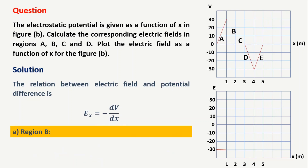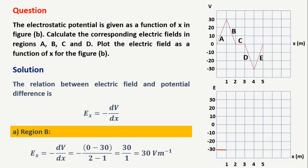Let us go for region B. Here the voltage goes down from 30 volts to 0 volts. So the change in voltage will be 0 minus 30. The electric field is the negative potential gradient at that point, so the answer is 30 divided by 1, which equals 30 volts per meter. Representing this in the E versus x graph, there is a flip from minus 30 volts per meter to 30 volts per meter.